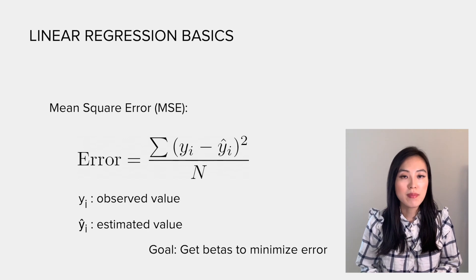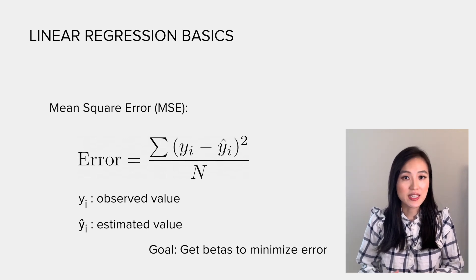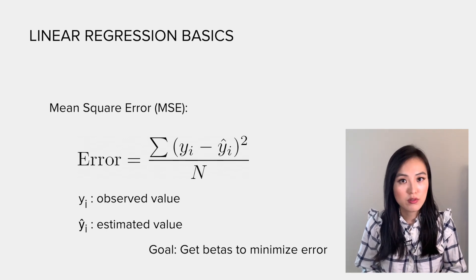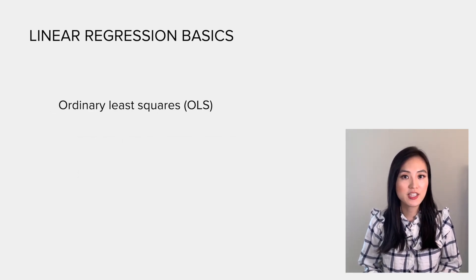Here, y_i refers to the observed value and y_i hat is the estimation. We want to obtain betas to minimize this error, so it becomes an optimization problem. This method is very commonly used and it actually has a name called ordinary least squares.